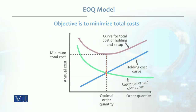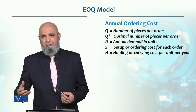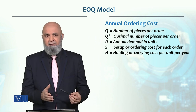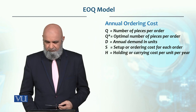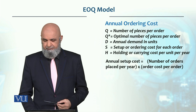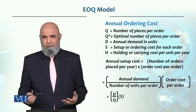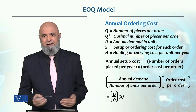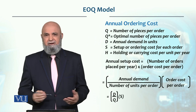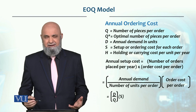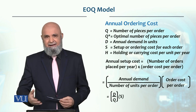Annual ordering cost is the number of orders placed per year multiplied by the ordering cost per order. For example, if you place 4 orders at 100 rupees per order, the total is 400 rupees. The number of orders placed per year is annual demand divided by order quantity. For example, if annual demand is 1000 units and order quantity is 100, you place 10 orders; if order quantity is 200, you place 5 orders.